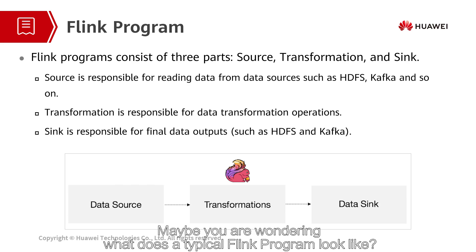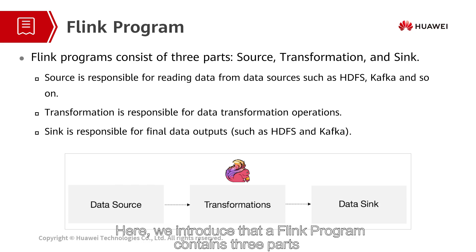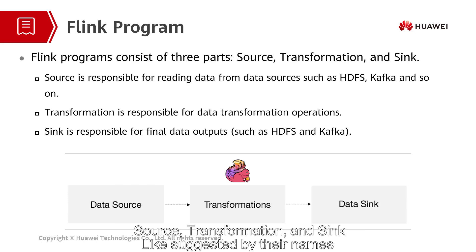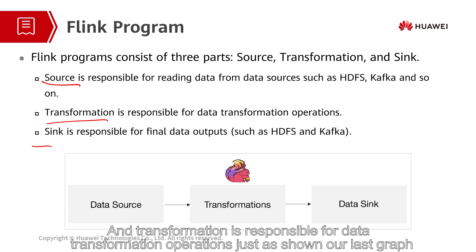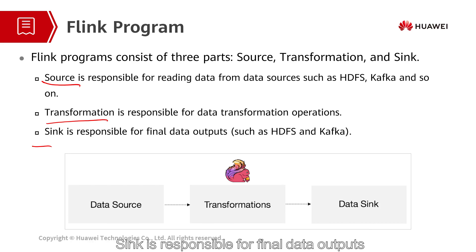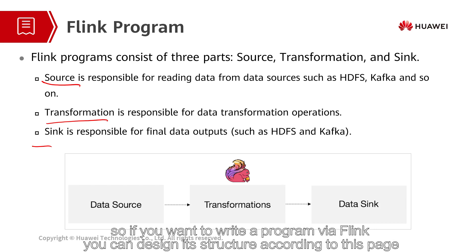You may be wondering what a typical Flink program looks like. A Flink program contains three parts: Source, Transformation, and Sink. Source contains operators to read data from external data sources. Transformation is responsible for data transformation operations. Sink is responsible for final data outputs. These three parts appear in almost all Flink programs, so if you want to write a program with Flink, you can design its structure according to this.